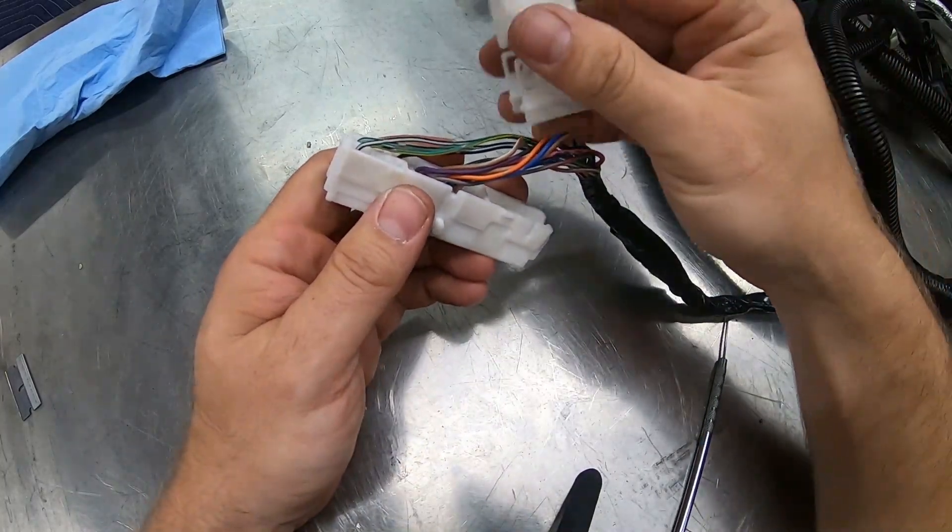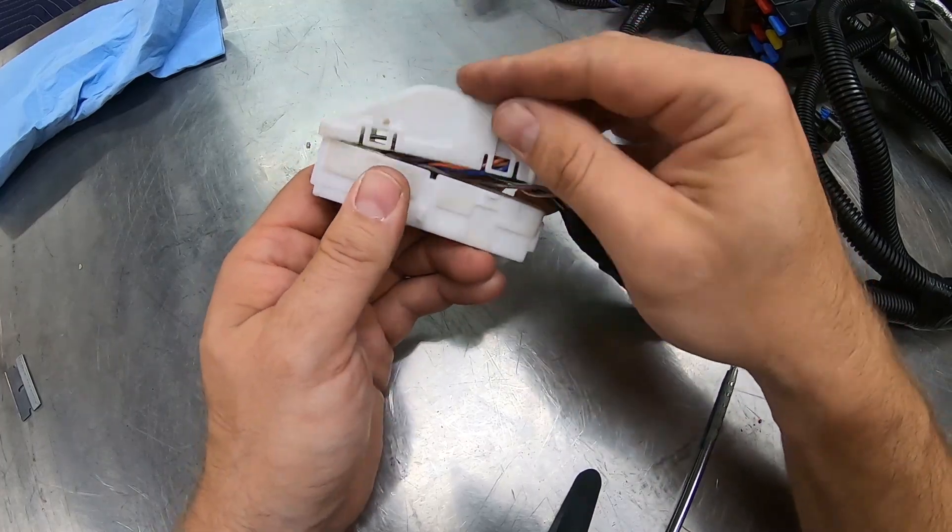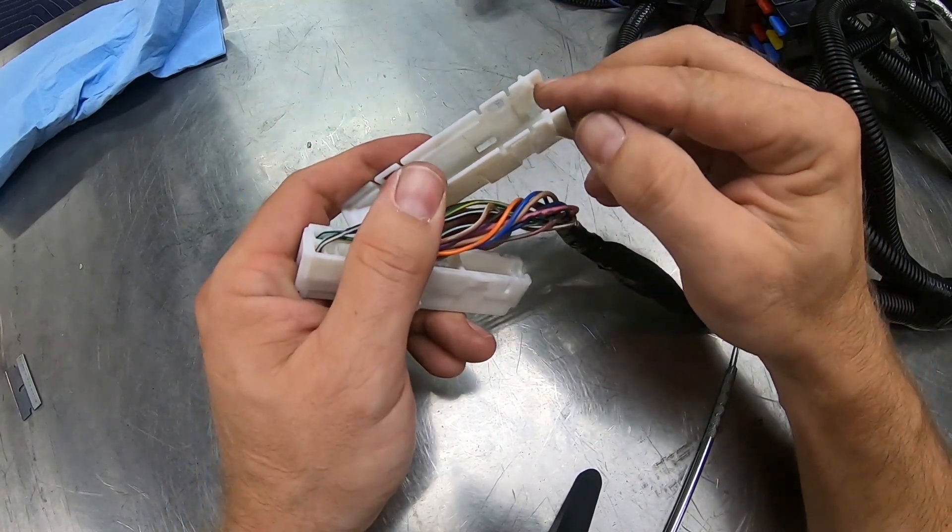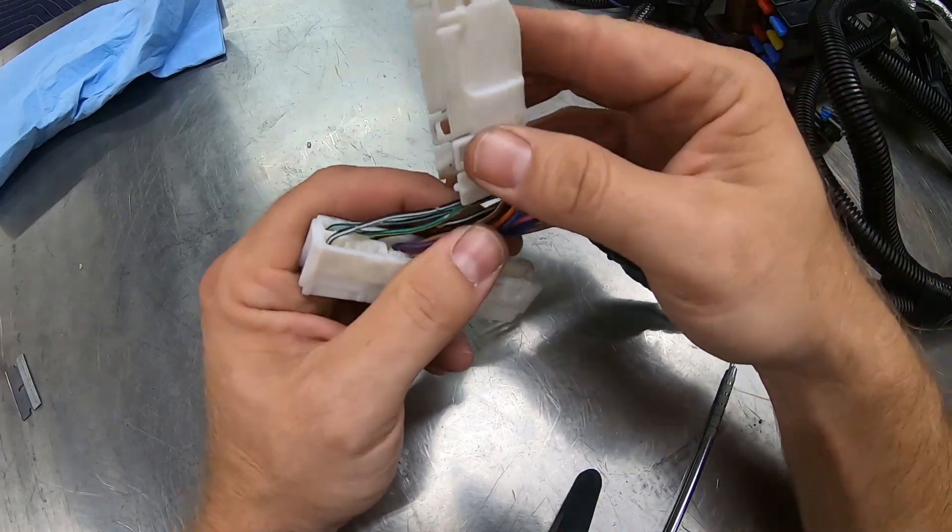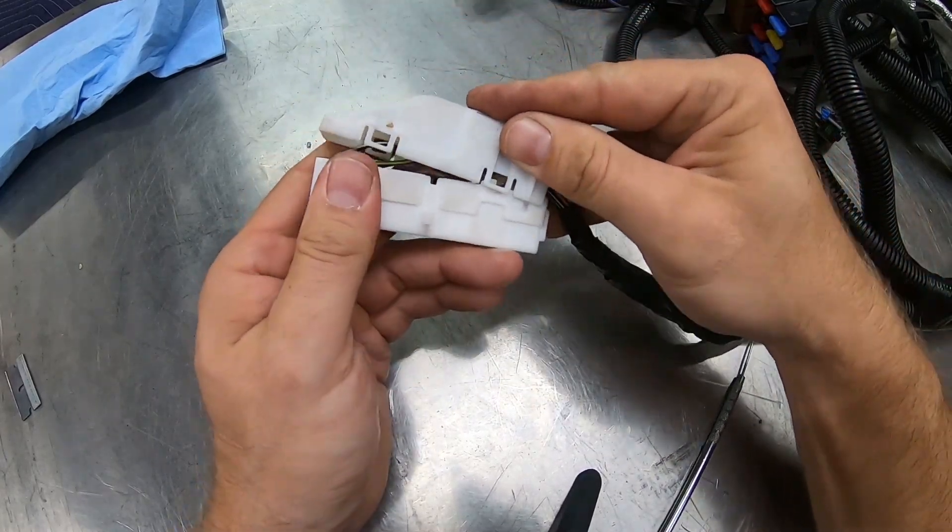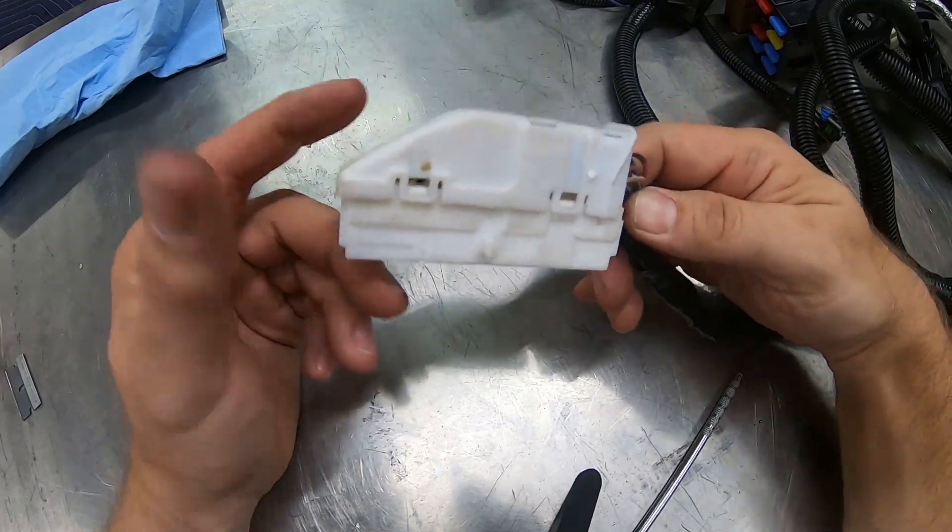And then you take this completed connector and slide it back into the back of the housing. And then you can take your wire cover, the back side cover, and it's actually keyed here. If you notice, there's some keys on the back side and a groove here on the connector. That's so that you know you have the orientation correct. And it clips into place. And that's it for the F102 connector.